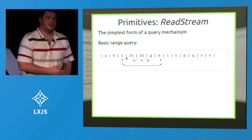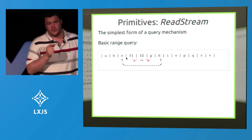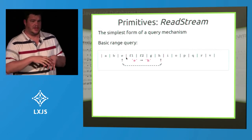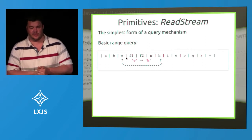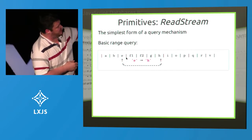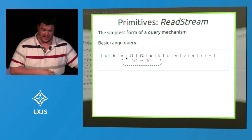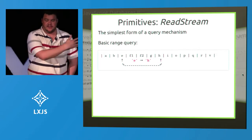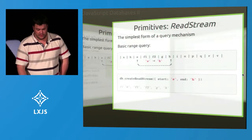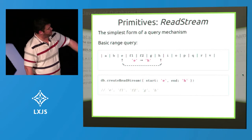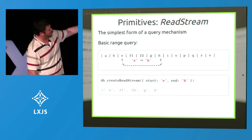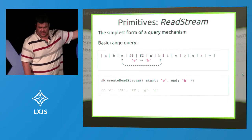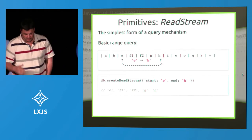So why is a read stream important? This comes from the fact that it's sorted data. We can use a read stream as a really basic query mechanism — it's the foundation of a query mechanism that you can build really complex querying structures on top of. Let's say you have a set of sorted data with some alphabetical keys. If you want to get all of the values from E to H, you create a read stream that starts at E, ends at H, and that stream will emit entries for each of the keys found in that range.